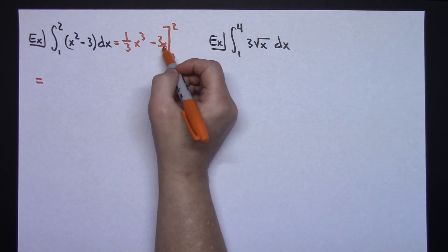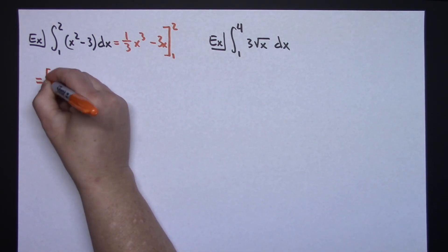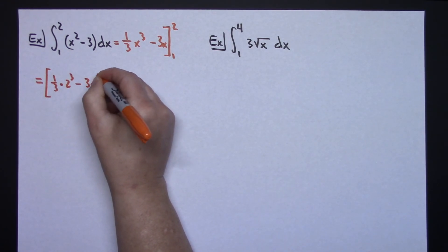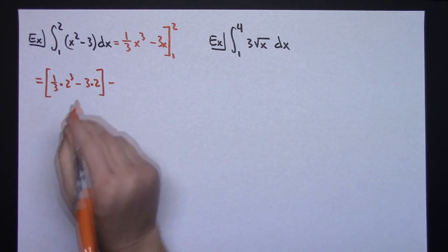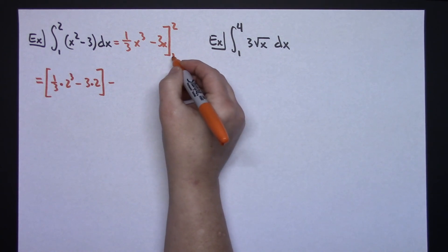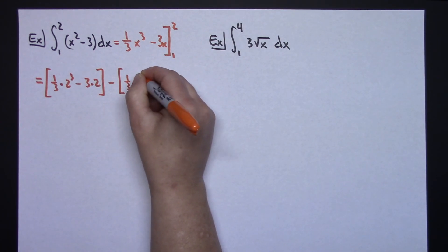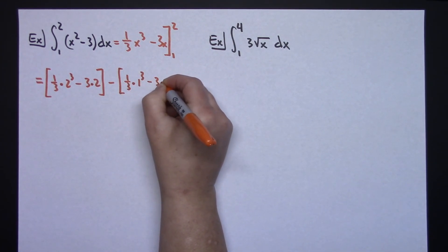Alright, now let's plug in 2 into both of those locations. Okay, so I'm going to have a 1 third times a 2 to the third minus a 3 times a 2. Alright, so there's my F(b). Now I'm going to subtract F(a), so I'm going to plug in my 1. So then I'm going to have a 1 third times a 1 raised to the third power minus 3 times 1.